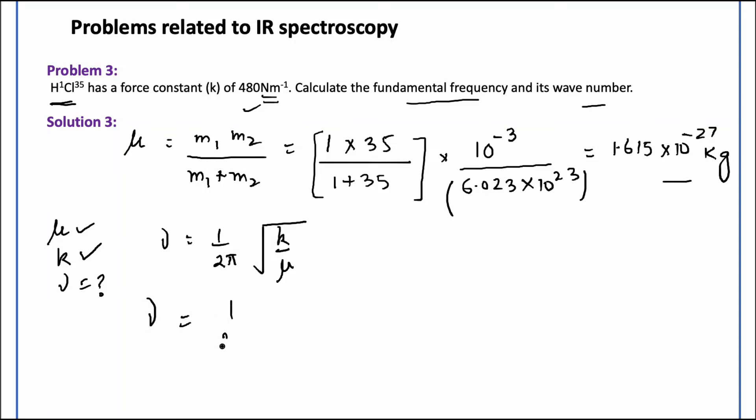So this frequency, it is equal to 1 over 2 pi, I take it as 3.14. The force constant is given to me as 480, and reduced mass that I have obtained is 1.615 into 10 raised to the power minus 27 kilograms. After calculations I get 8.676 times 10 raised to the power 13 hertz.